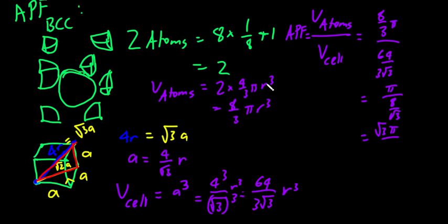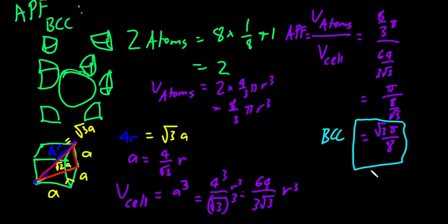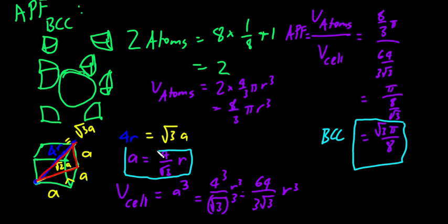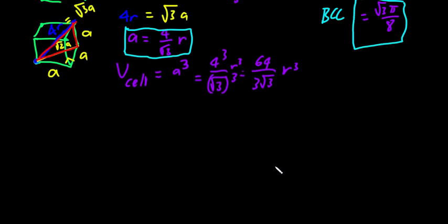The relationship between a and r — that 4r = √3·a — is also really important and sometimes you'll be asked to derive formulas like this in exams to pick up a lot of marks. So either memorizing these or knowing the method keeps marks for you. Lastly, we have the FCC atomic packing factor.